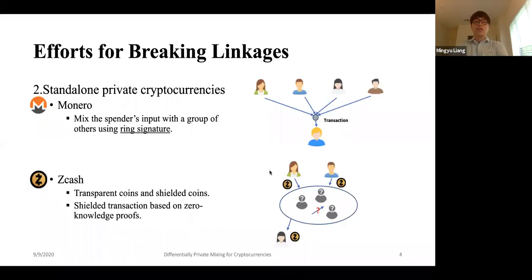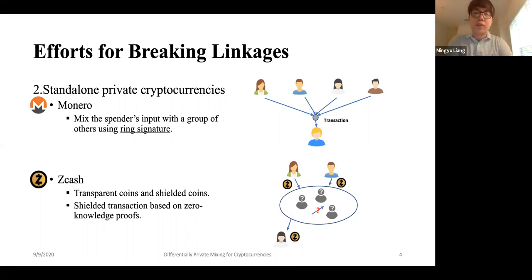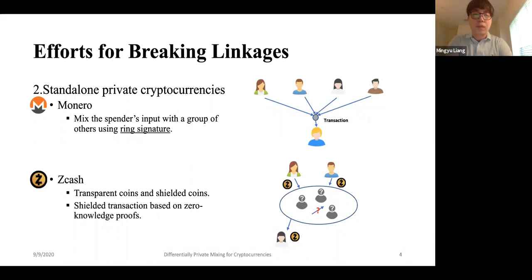The second line of efforts for breaking the linkage is to design a standalone private cryptocurrency. Two of the most popular ones are Monero and Zcash. Our research is actually heavily based on the ring-based anonymous transaction of Monero, which we'll talk about in more detail later.